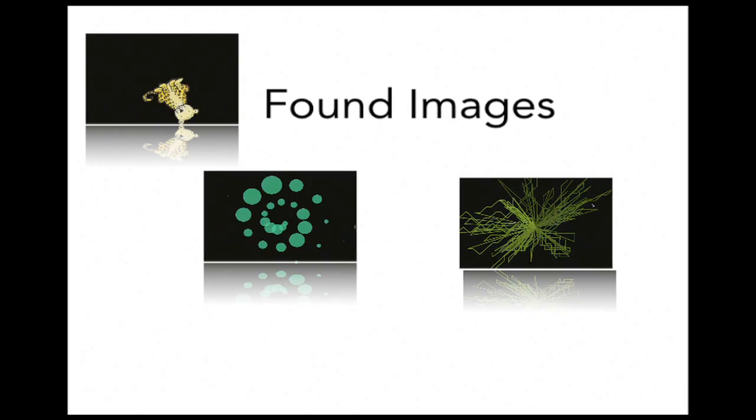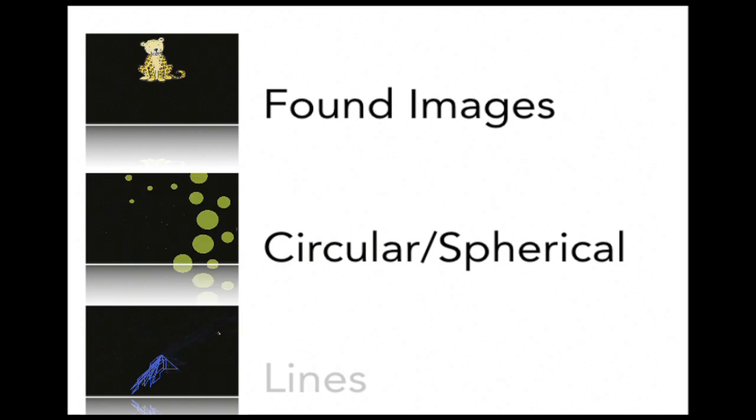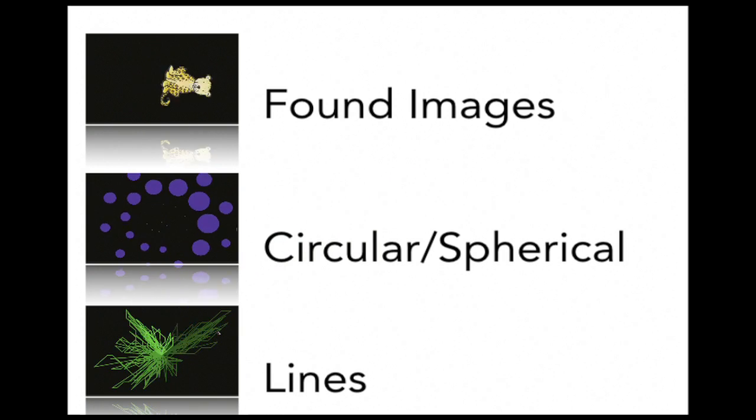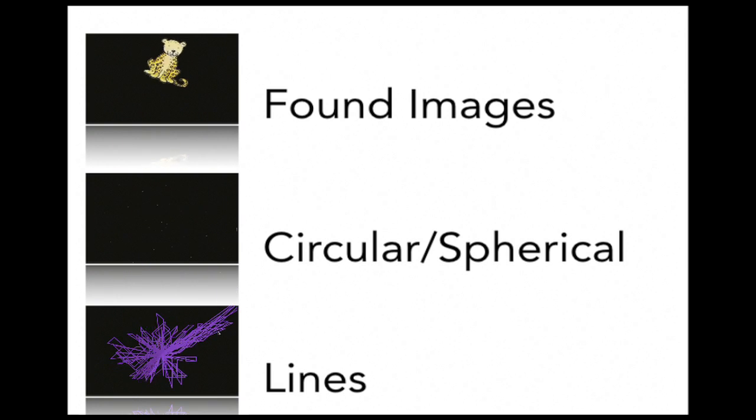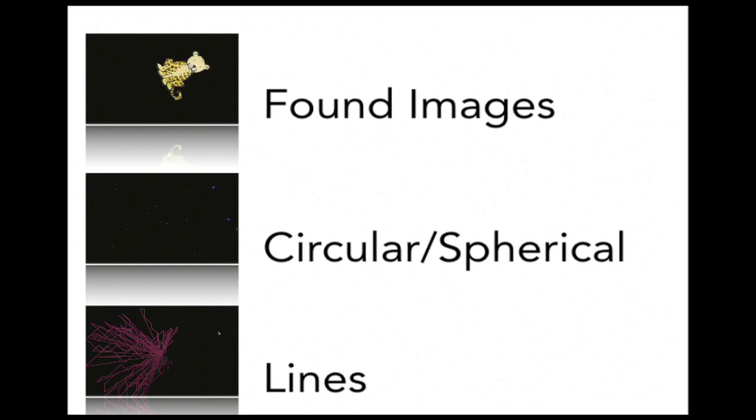The visual feedback consists of one of three possible types of graphical objects: found images, like a cartoon character; circular or spherical shapes; and lines. In this video, we will be using a cartoon lion and sheep as found images. However, any image can easily be used.